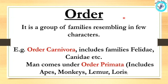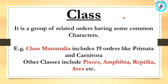We are also looking at the order Primates, which includes apes, monkeys, lemur, loris, and others. Now we talk about class. Orders with common characters are grouped into a class. For example, class Mammalia is very important — 19 orders are in this class, including Primates and Carnivora. Other classes include Pisces, Amphibia, Reptilia, and Aves.